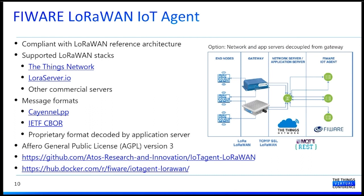This IoT agent supports different LoRaWAN stacks, such as The Things Network, LoRaServer.io, and other commercial servers. On the slide, we can see the architecture used to perform the integration with the TTN platform. Different elements are involved in this architecture: we can see the nodes, gateways, and hubs, as well as the TTN platform. The TTN platform is accessed by the IoT agent using the MQTT protocol. It is important to say that this IoT agent supports specific message formats such as Cayenne LPP, CBoard, as well as other proprietary formats. More information about the IoT agent can be found at the links below.